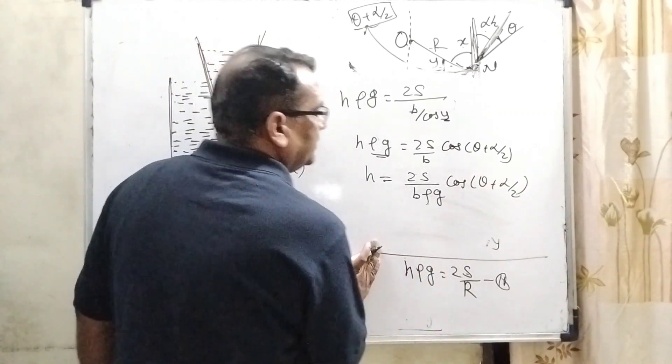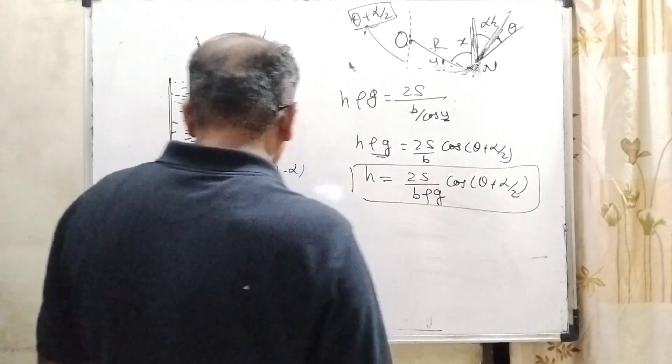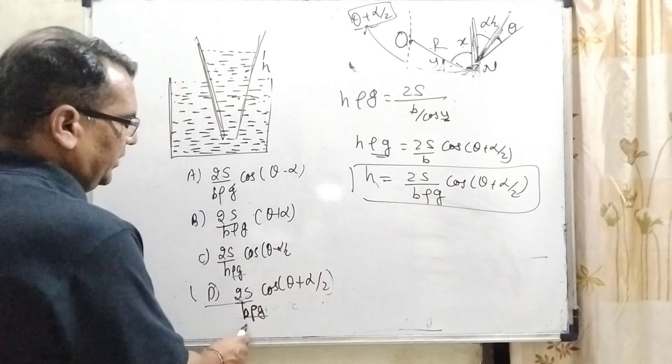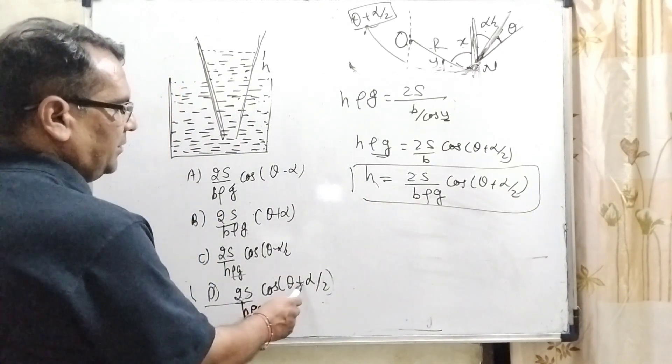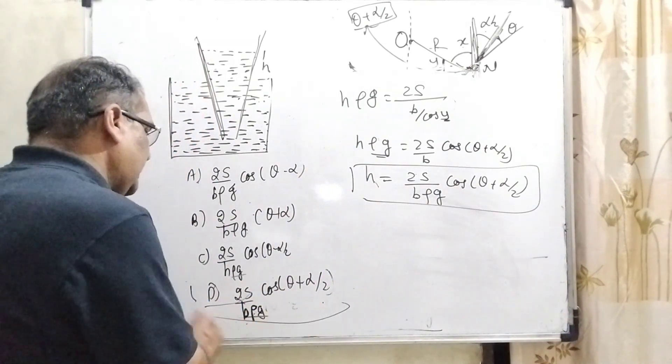Now, we can see that which option is correct. Now, here, H equal to 2S by B rho G cos theta plus alpha by 2. So, here, D option is correct.